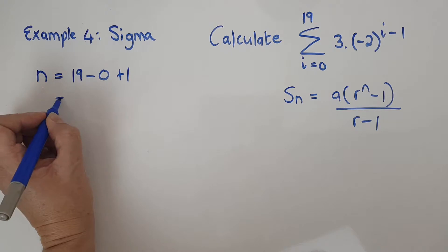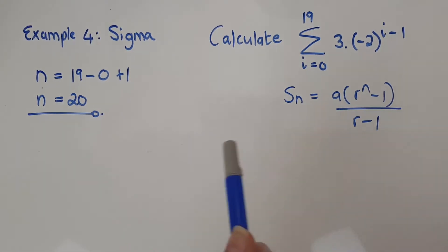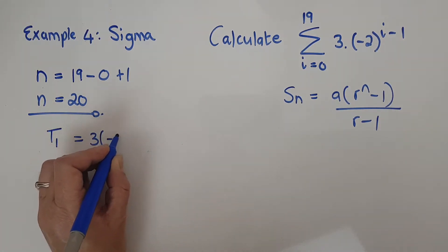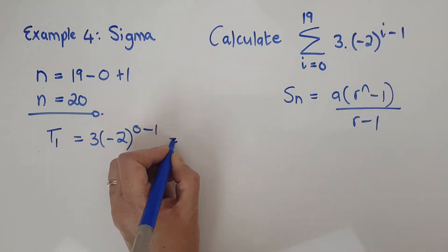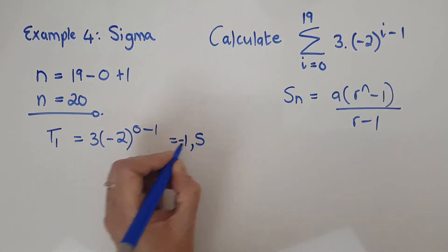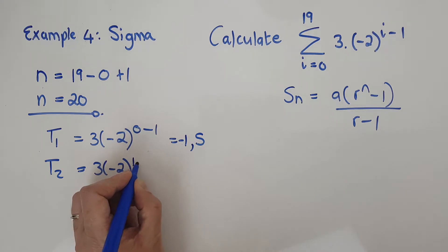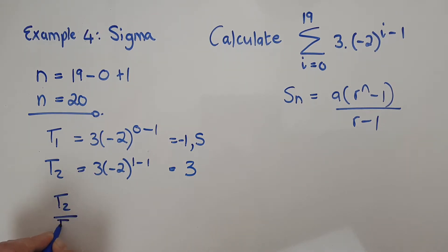The next thing I need to do is expand. I need to get t1 and t2. Since it's geometric, just two terms is enough. So t1 is three times negative two to the power of zero minus one — plug into calculator — that gives me negative 1.5. Then t2 is three times negative two to the power of one minus one, which gives me 3. Then t2 over t1 is 3 over negative 1.5.